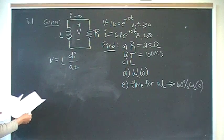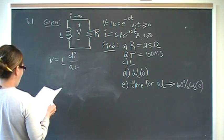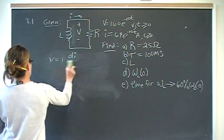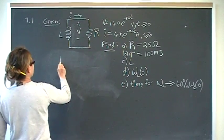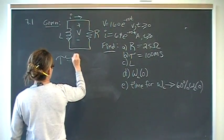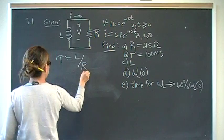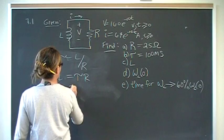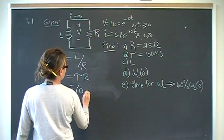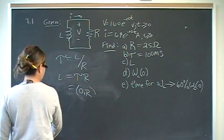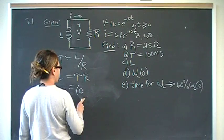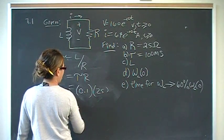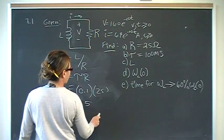The other way of doing it is to recall the relationship tau is equal to L over R. So therefore, L is equal to tau R, which we already figured out was 0.1 times 2.5. Therefore inductance is 2.5 henries.